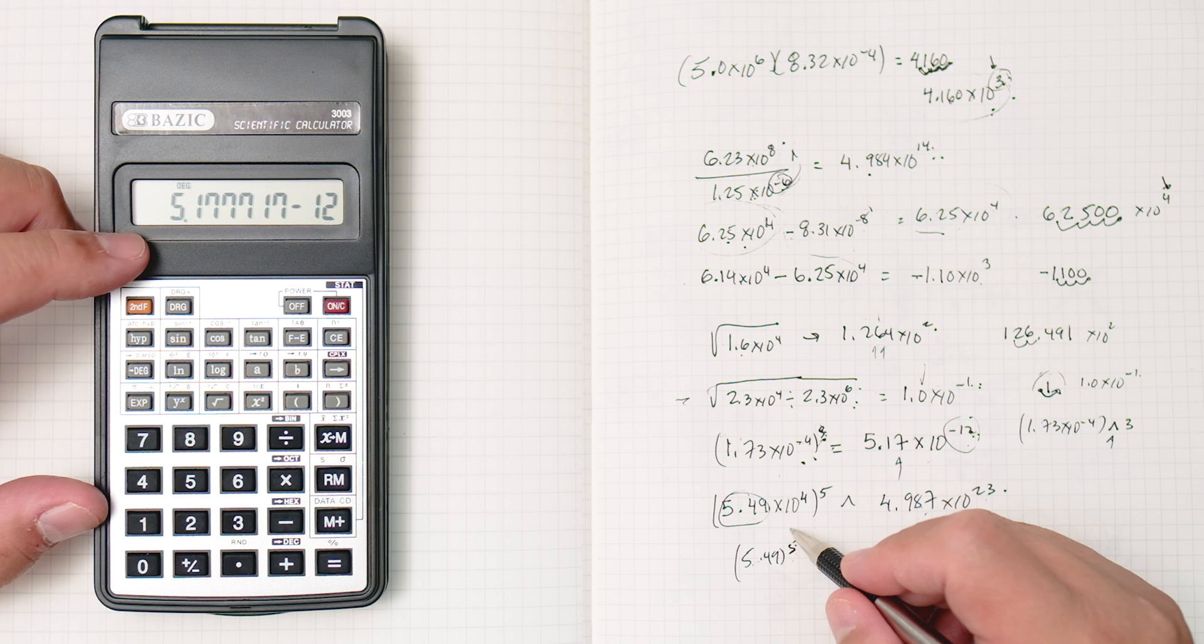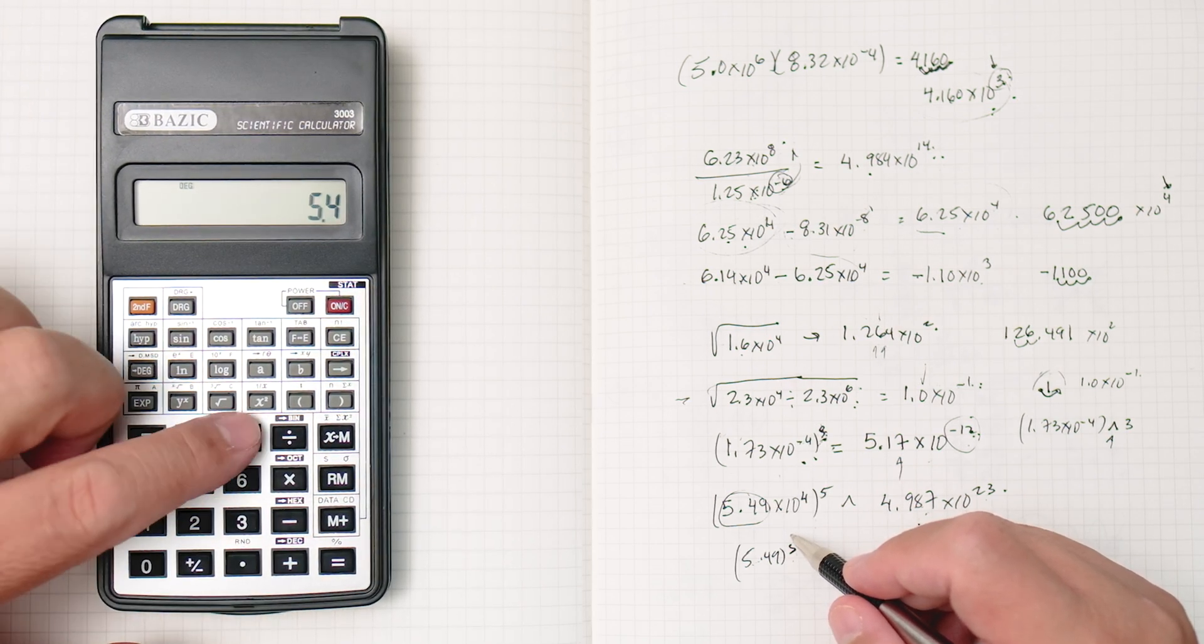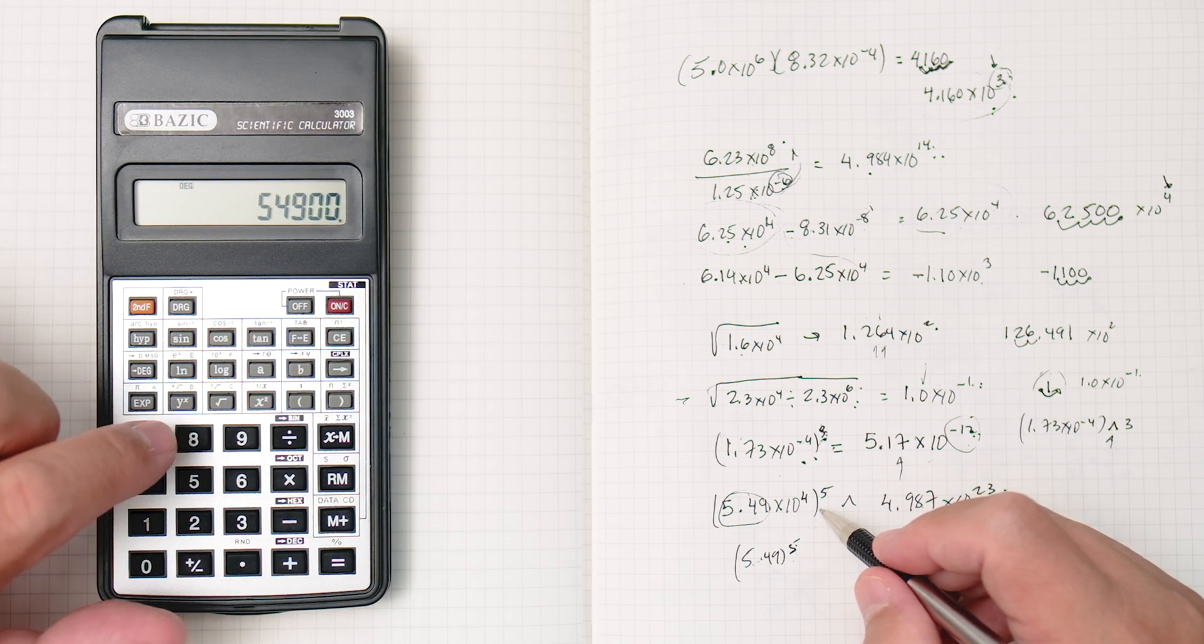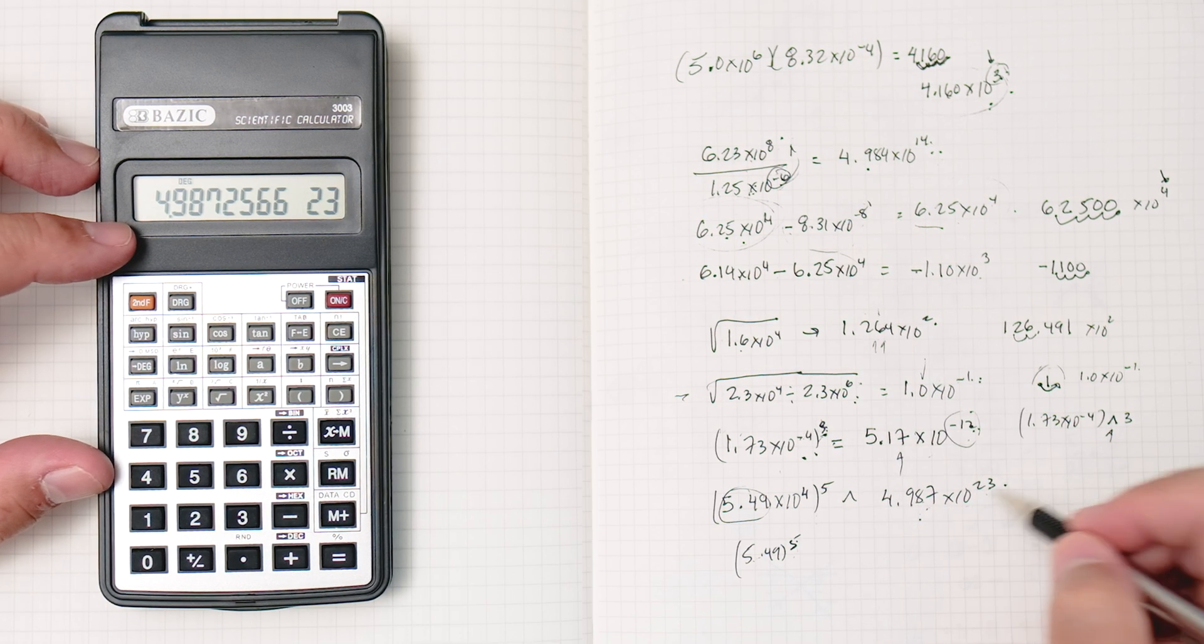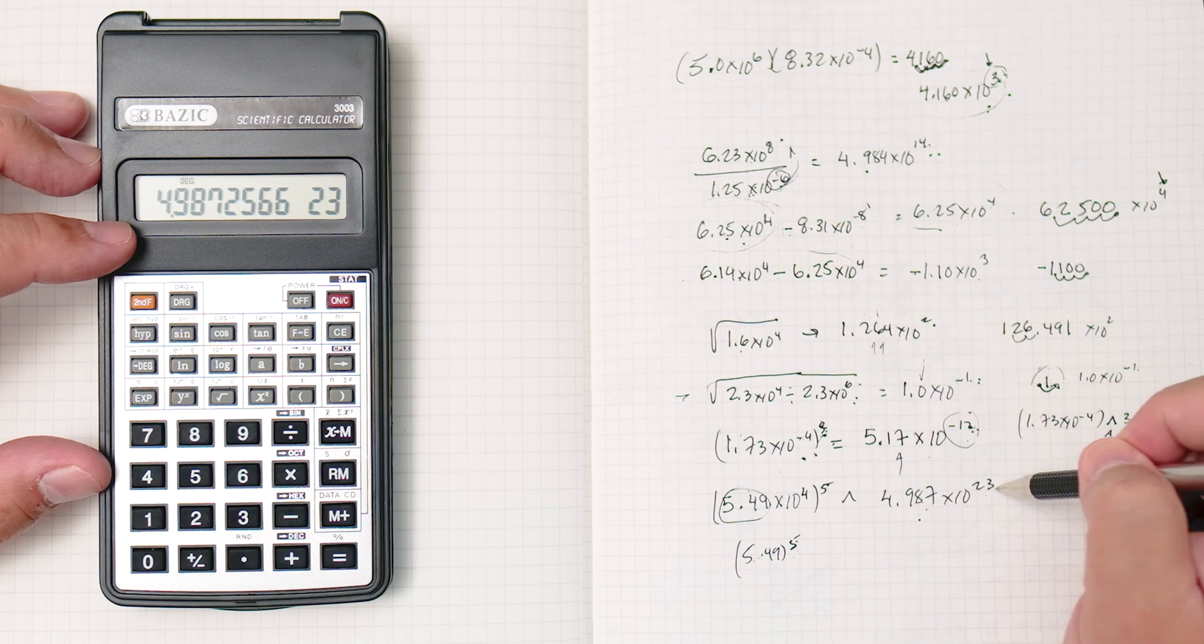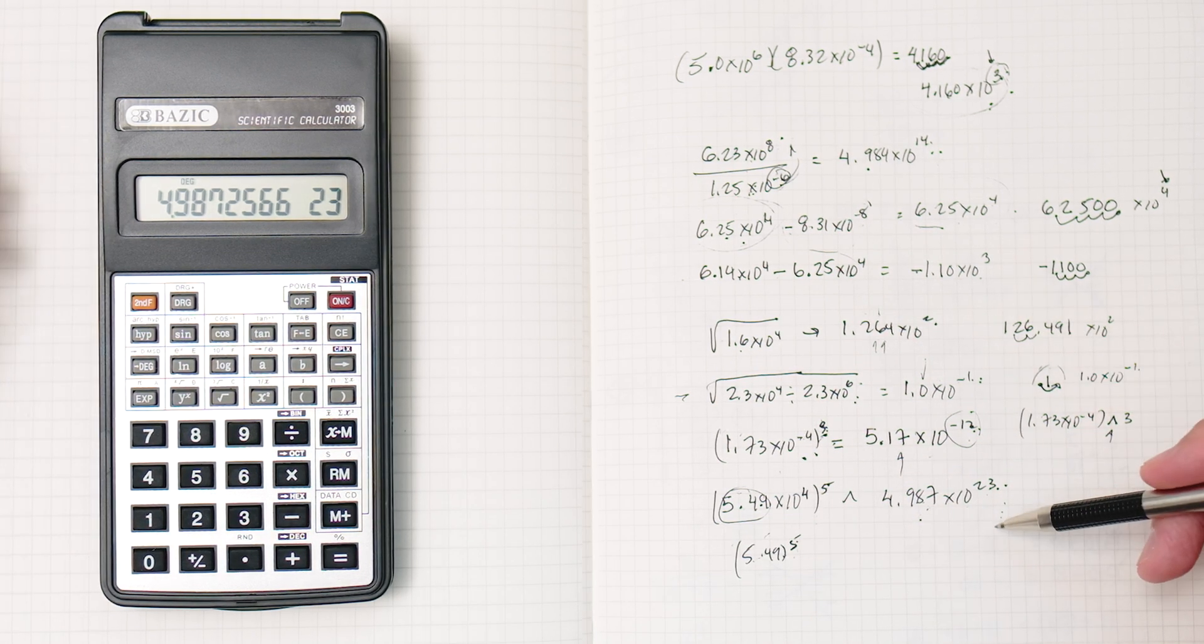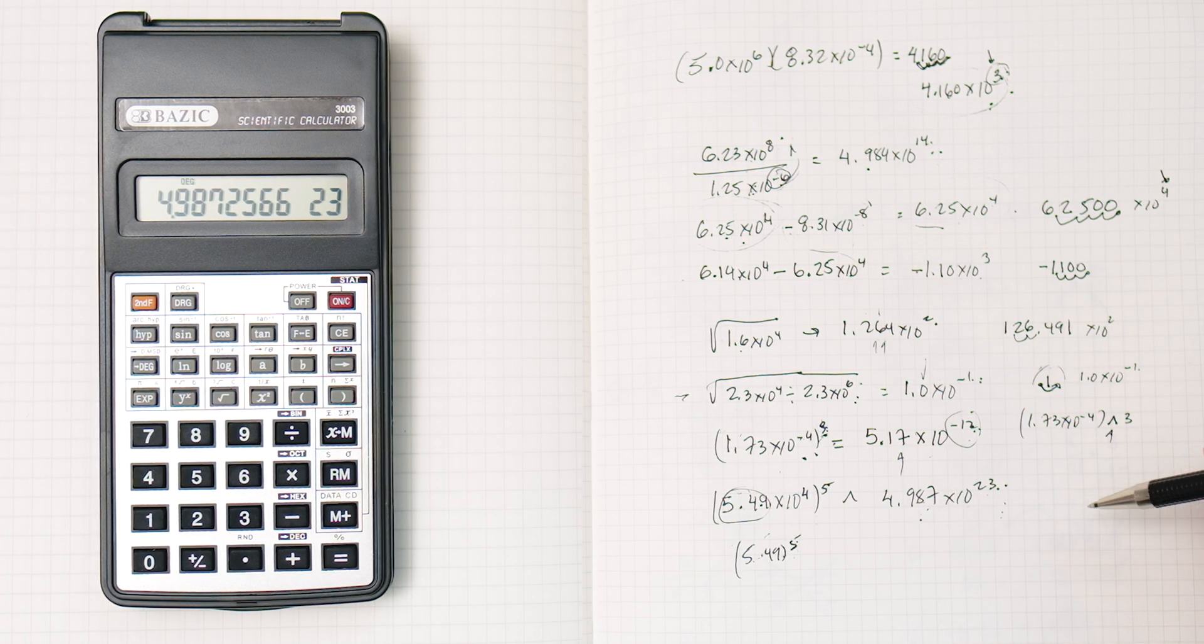Let's do this one. This one right here. Let's clear that. 5.49 times 10 to the 4th. And then we press y to the x to the 5th power equals 4.987 times 10 to the 23rd. Really nice. 4 times 5 is 20, but this is 23. Well, 5.49 to the 5th power, you have to change the decimal. If you want more instruction on how to use step-by-step by using it by hand manually, I got a great video you can watch. You can look it up in the description or you can look it up in my channel.